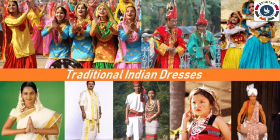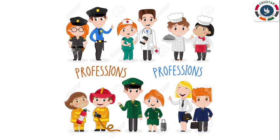Different places have their traditional dresses. Even in India, each state has its own traditional wear. The clothes worn by people living in Kashmir are different from what people in Kerala wear, because the weather in these regions is different. People like porters, postmen, lawyers, doctors, soldiers, etc. wear special clothes for work. These clothes tell us what work they do and are called uniforms.